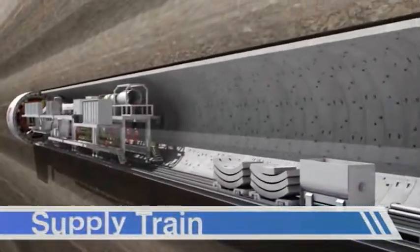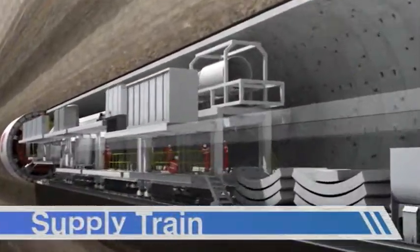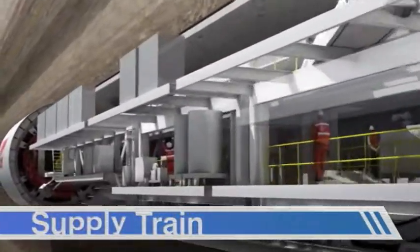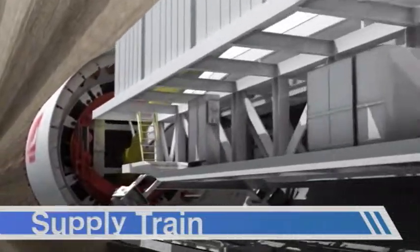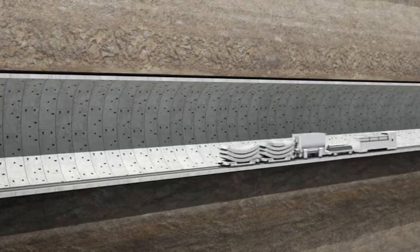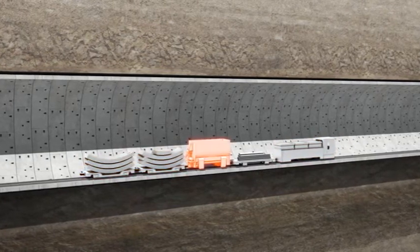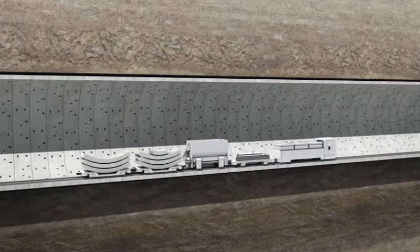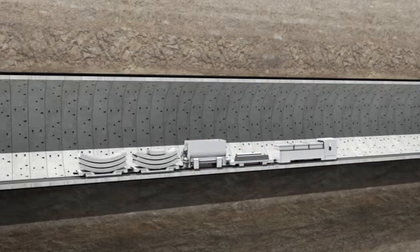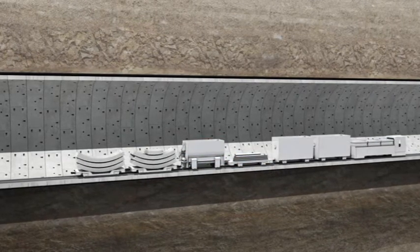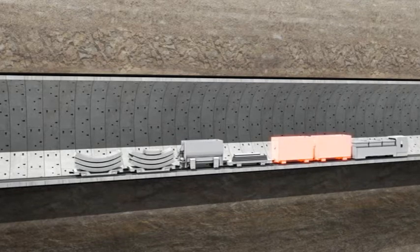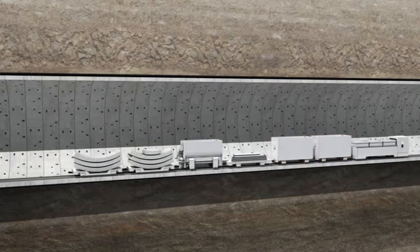The segments and other supplies which allow the advance of the TBM are transported to the TBM by the supply train. This train typically comprises of a locomotive pushing two segment cars, a grout car and platform to carry other materials. In addition, when the evacuation of the muck is by the train, several muck cars must be also included in the train.